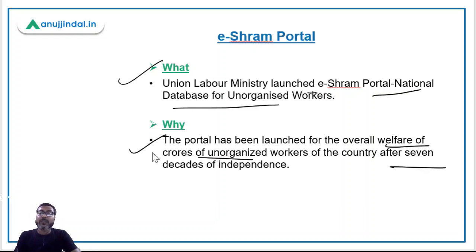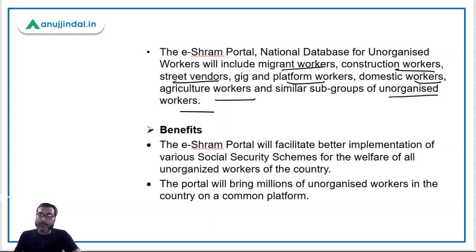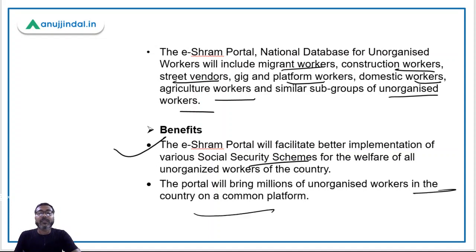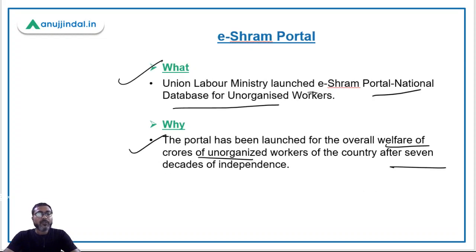This portal has been launched for the overall welfare of crores of unorganized workers after seven decades of independence. It will include migrant workers, construction workers, street vendors, gig and platform workers, domestic workers, agriculture workers, and similar subgroups of unorganized workers. This portal will facilitate better implementation of various social security schemes meant for unorganized workers. The total outlay approved by the labour ministry is 404 crores for registration of unorganized workers on this portal. Workers can self-enroll using their Aadhaar card and mobile number.